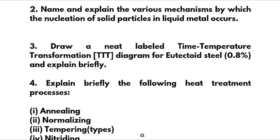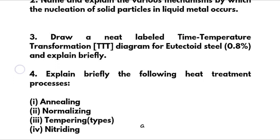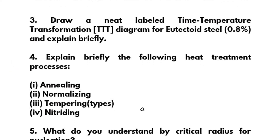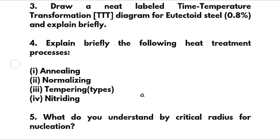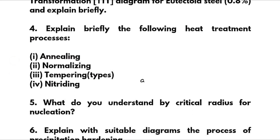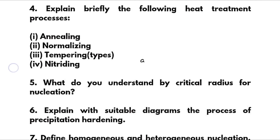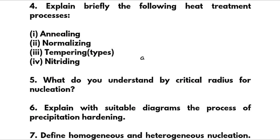The TTT diagram question is super important — you should surely refer it; don't neglect it. It will definitely be a 10-marks question. Fourth: explain briefly the following heat treatment processes — annealing, normalizing, and tempering. There are also some tempering types you should refer: austempering and martempering.